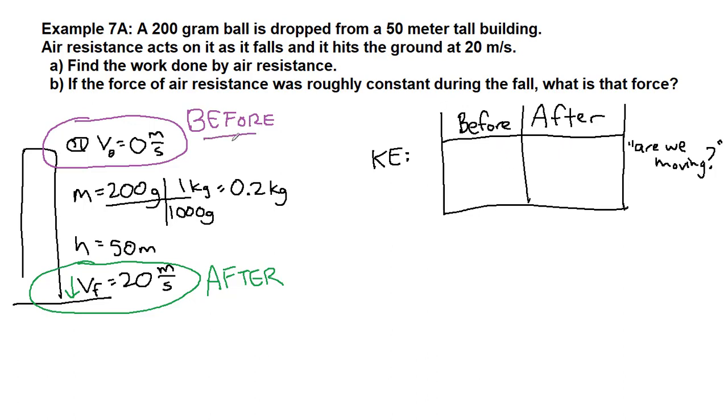So let's do that now. At the beginning of the problem, in the before, are we moving? The answer is no. We dropped it from rest, so a no means we get a zero in that spot. In the after part of the situation, we ask ourselves, are we moving? A simple yes or no question based on the picture we've drawn. The answer is yes. In that case, we make the term show up for kinetic energy, one half mv squared. I've labeled it v final here because that's what we labeled it, but you could just call it v.